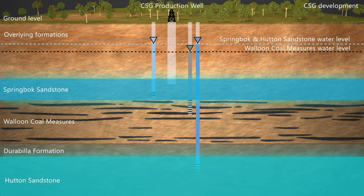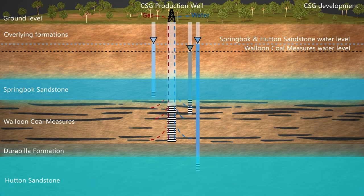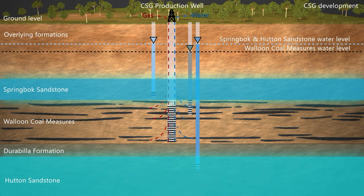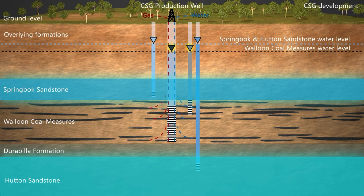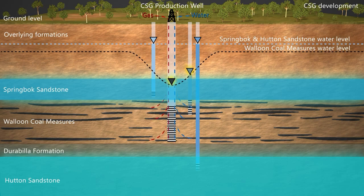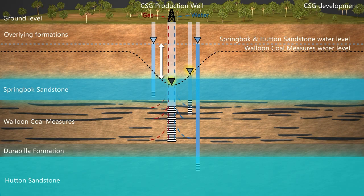Gas is extracted by drilling a well into the coal formation and pumping groundwater out of the well to lower pressure, which in turn releases the gas. As the CSG development proceeds, water pressure in the coal formation continues to fall. This creates a pressure difference between the coal formation and the surrounding aquifers.